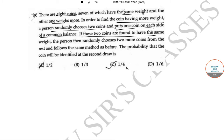If these 2 coins are found to have the same weight, the person then randomly chooses 2 more coins from the rest and follows the same method as before. So, the probability that the coin will be identified at the second draw is